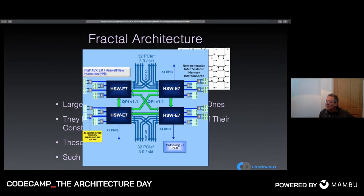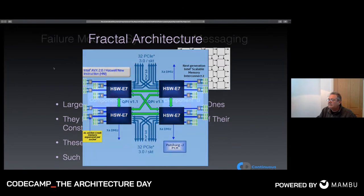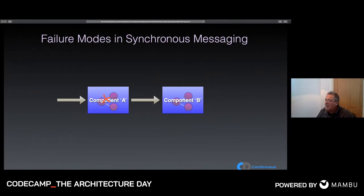We can't increase CPU clock speeds anymore due to physics and heat generation limits in silicon, but we can keep adding transistors and make modern processors more parallel. Modern processors have multiple cores that communicate via asynchronous messaging over message buses — the QPI bus that coordinates processor work is one such device. In that sense, modern CPUs are themselves a form of reactive system.